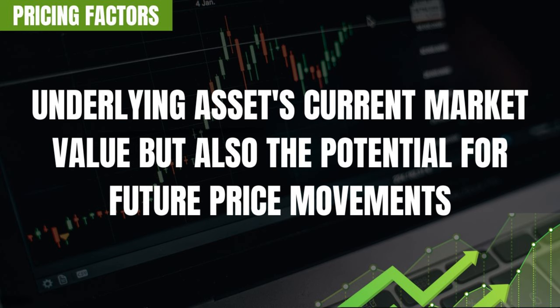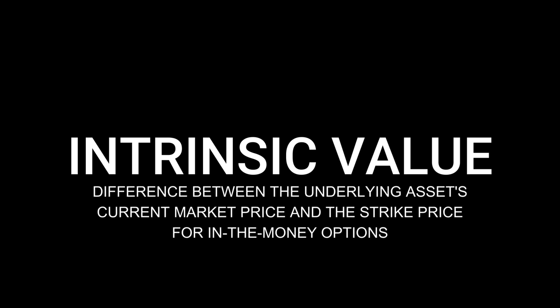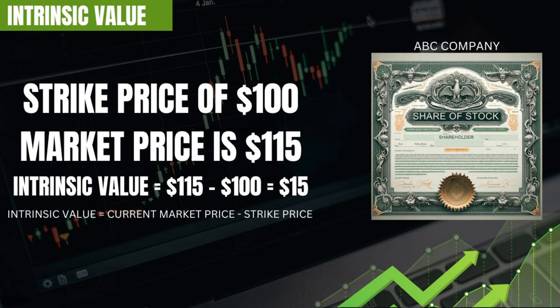The price of an options contract reflects not only the underlying asset's market value, but also the potential for future price movements. Intrinsic value is the difference between the underlying asset's current market price and the strike price for in-the-money options. For example, if you have a call option for ABC company with a strike price of $100 and the current market price is $115, the intrinsic value is calculated as the current market price minus the strike price, which is $15.